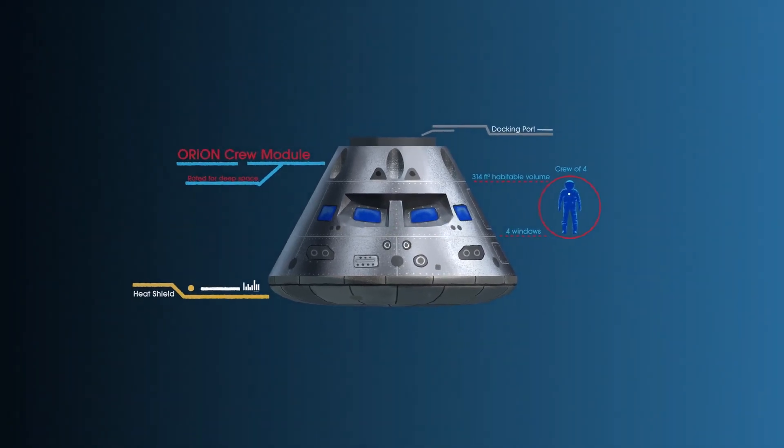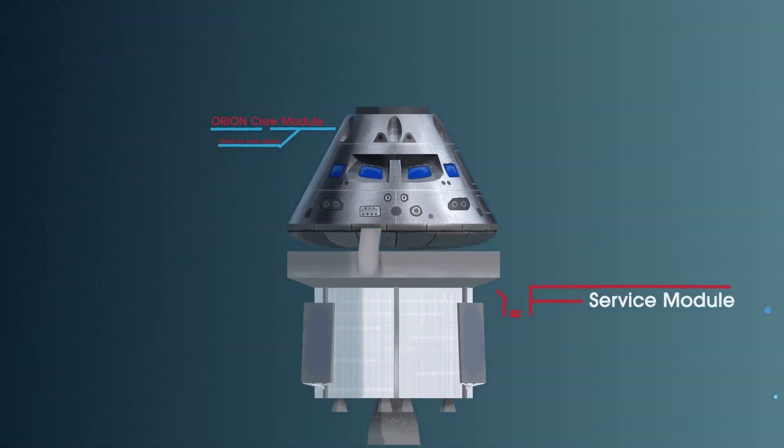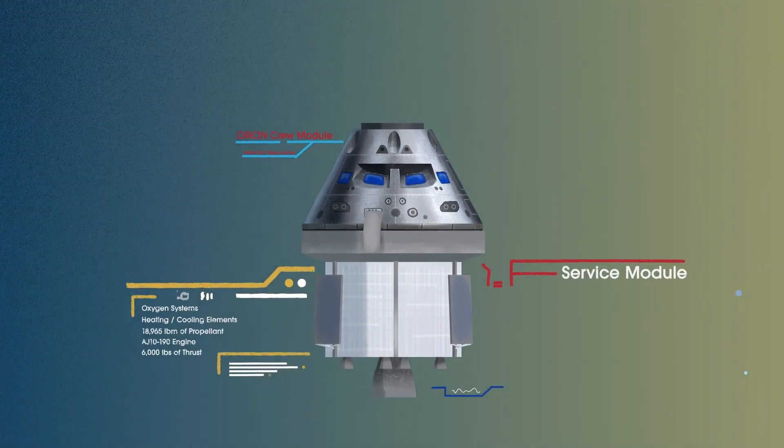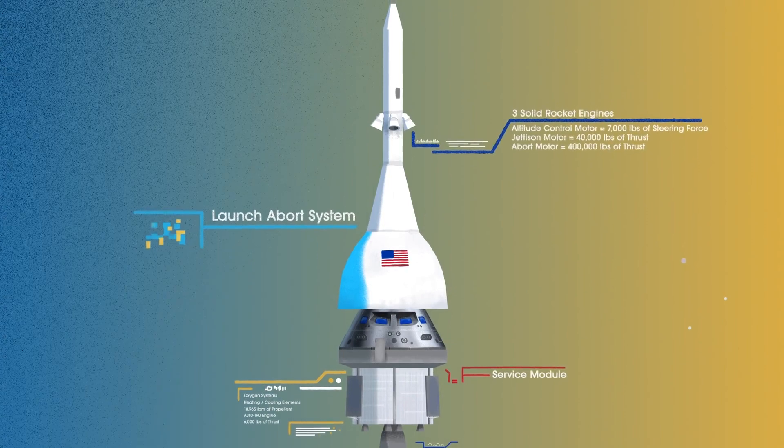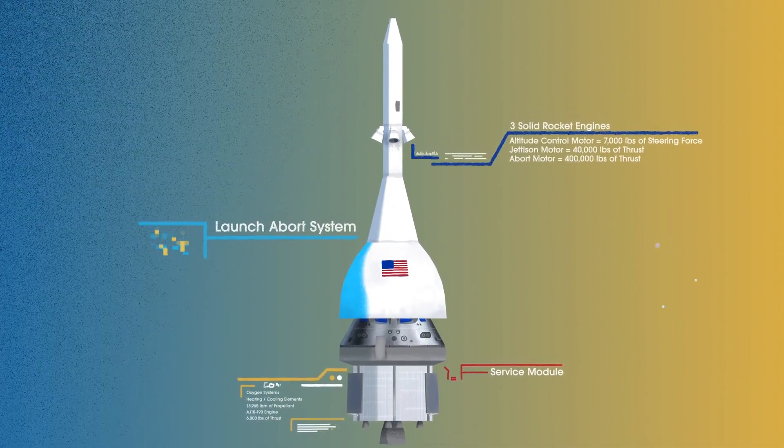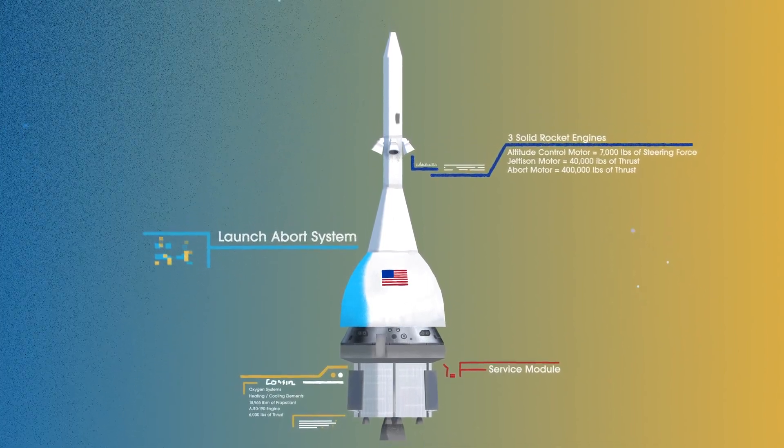The crew module, where up to four astronauts will live and work throughout the flight. The service module, with life-support systems for the crew and its own engine and fuel reserves. And a launch abort system, with engines capable of pulling the crew module to safety during launch should anything go wrong.